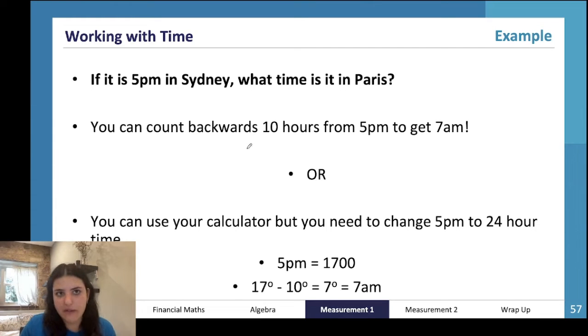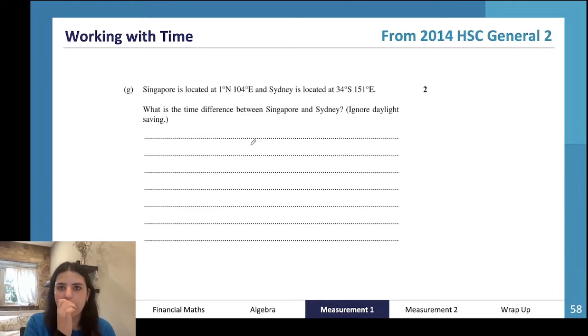This is from the 2014 HSC General 2 paper. Singapore is located at 1° North 104° East, and Sydney is located at 34° South 151° East. What is the time difference? We have 151 minus 104, which gives us 47. We're going to times that by 4 to get the number of minutes, which is 188. Then divide that by 60 to get the number of hours - 3.13, which is 3 hours and 8 minutes. That's 3 hours essentially.